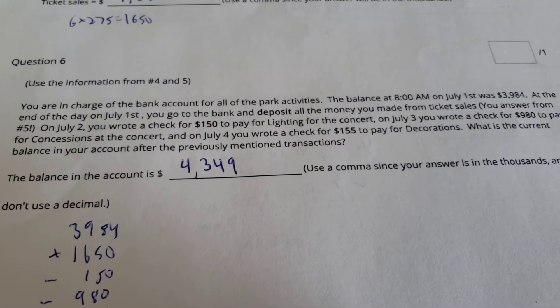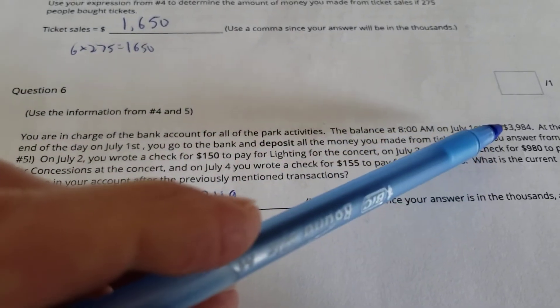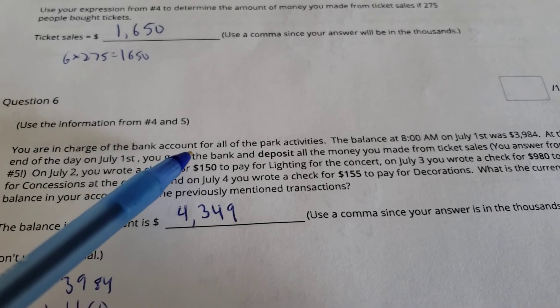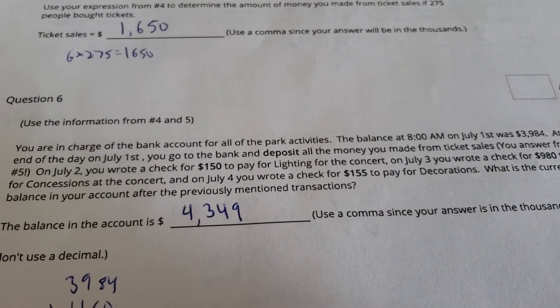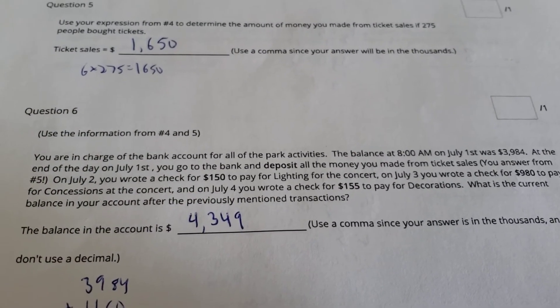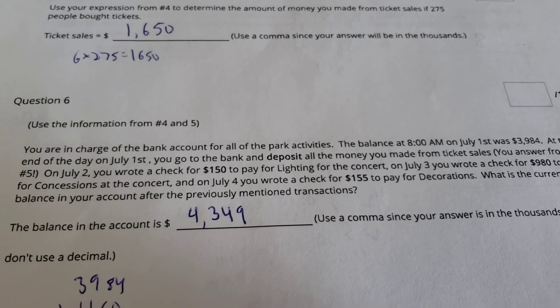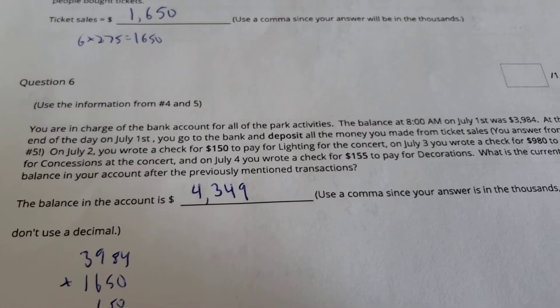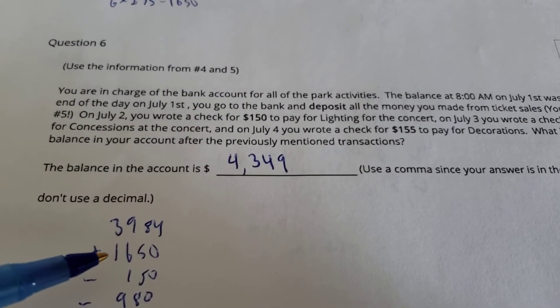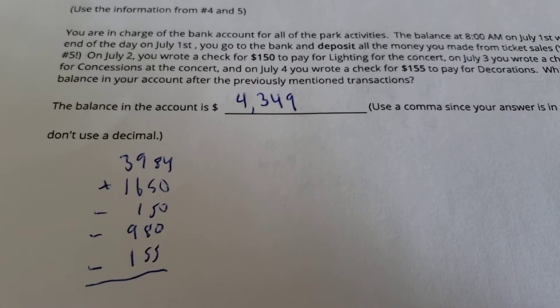Number 6, continuing on with the same problem. This time, you're in charge of the bank account for all the park activities. At 8 a.m. July 1st, the balance in your account was $3,984. At the end of the day on July 1st, you go to the bank and deposit all the money you made from ticket sales, right up here. Then, July 2nd, you wrote a check for $150 to pay for lighting for the concert. July 3rd, you wrote a check to pay $980 for concessions at the concert. And July 4th, you wrote a check for $155 to pay for those decorations. What's the balance after all those transactions? So you start off with that beginning balance, and then you add your deposit, what you made from ticket sales. Then you got to subtract out the three things you wrote for checks. Grand total should be $4,349.